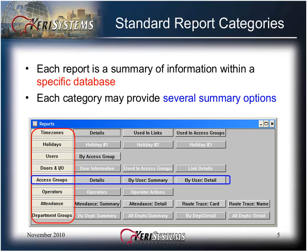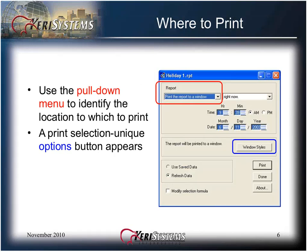Each report is a summary of information within a specific database. Each category may provide several summary options. Click the button for the type of report you need. Use the pull-down menu to identify the location to which to print.